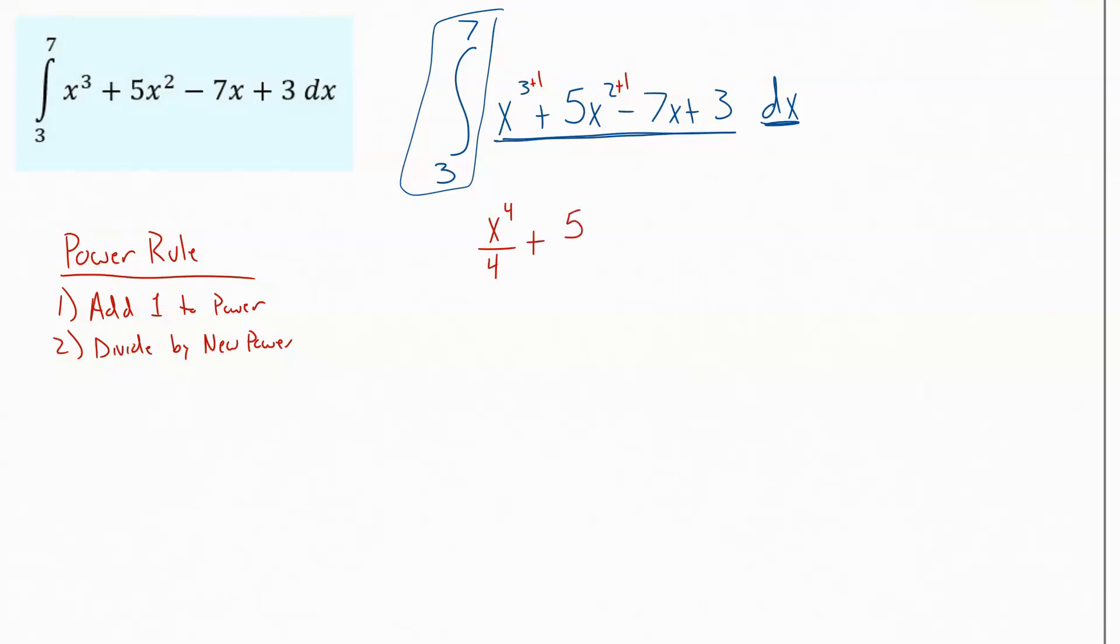I get a plus, again, adding 1 to the power, that's going to get me 5x to the 3rd, divide by that new power, so divide by 3. Minus, and then we've got an unwritten 1 on that x, so I'm going to add 1 to the power, that's going to get me 7x squared, and then again, divide by that new power.